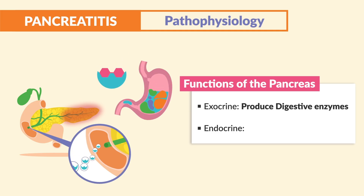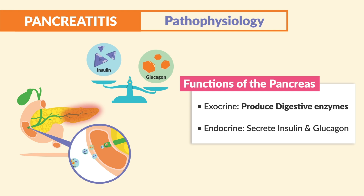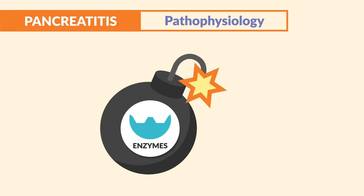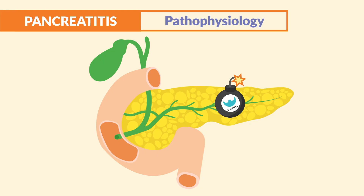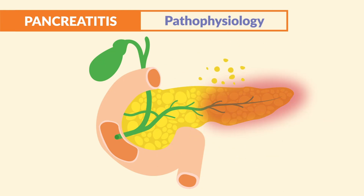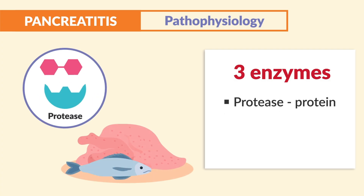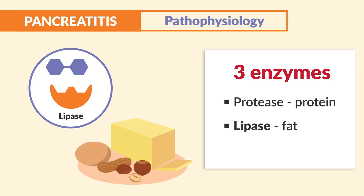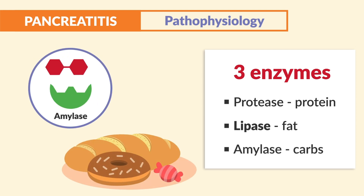The enzymes are the key here — they're like ticking time bombs to break down and digest food. The three key enzymes to know are: protease, which breaks down protein; lipase, one of the biggest affected by pancreatitis, which breaks down fats — just think lipids and lipase, lipid for fat; and lastly amylase, which breaks down carbs or carbohydrates.